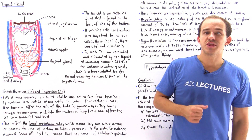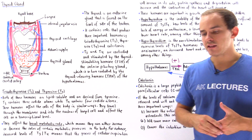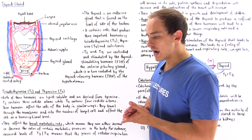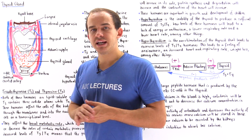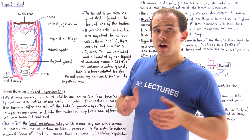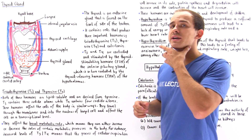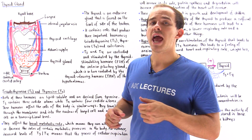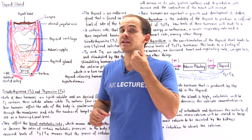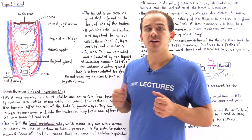The next endocrine gland that we're going to focus on in detail is our thyroid gland, or simply our thyroid. Let's begin by discussing the location of the thyroid gland in our body. If we examine the front portion of our neck and peel off our skin, we're basically going to see our thyroid gland.